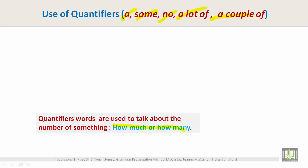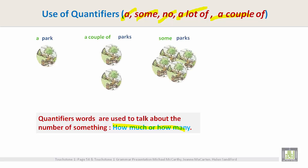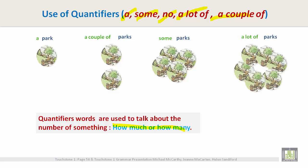Quantifiers are used to talk about the number of something. For example, a park, a couple of parks, some parks, a lot of parks.